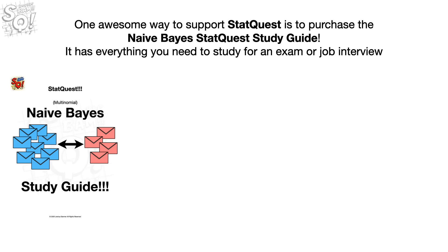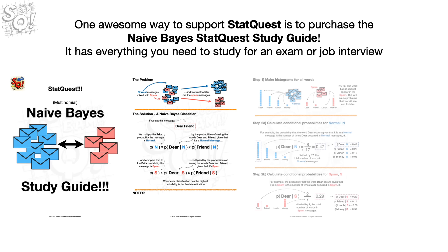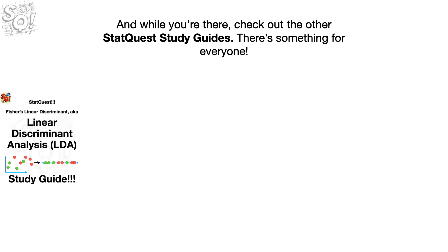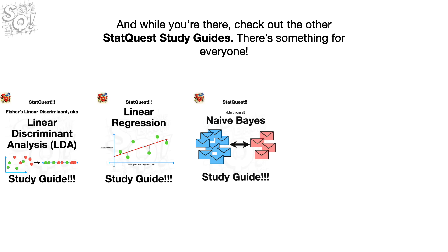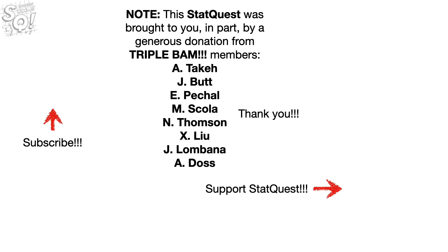One awesome way to support StatQuest is to purchase the Naive Bayes StatQuest study guide — it has everything you need to study for an exam or job interview, and it's eight pages of total awesomeness. While you're there, check out the other StatQuest study guides — there's something for everyone. We've made it to the end of another exciting StatQuest. If you like this StatQuest and want to see more, please subscribe. And if you want to support StatQuest, consider contributing to my Patreon campaign, becoming a channel member, buying one or two of my original songs or a t-shirt or a hoodie, or just donate. The links are in the description below. Until next time, quest on!